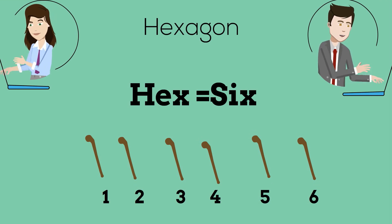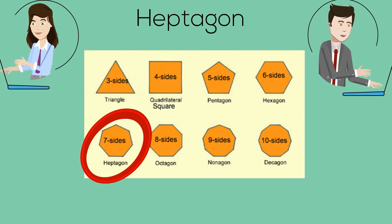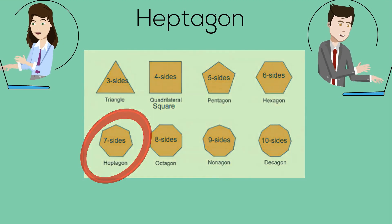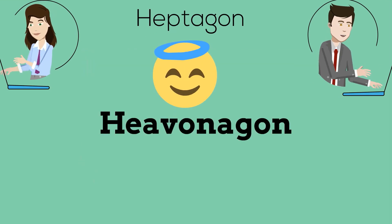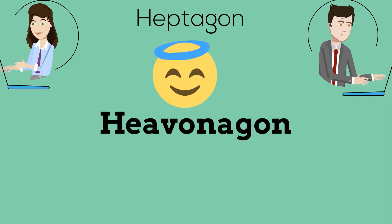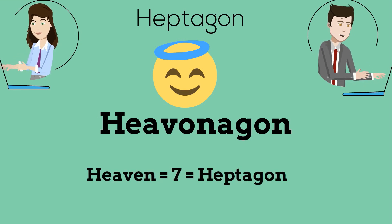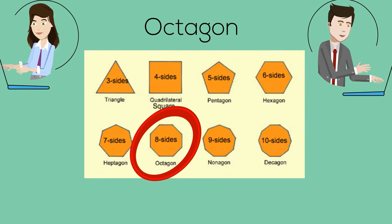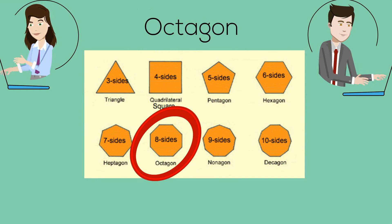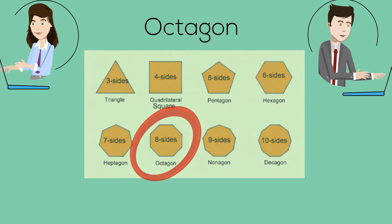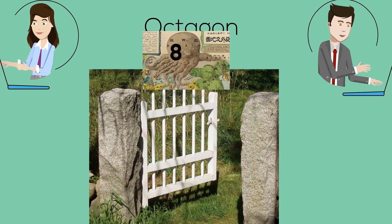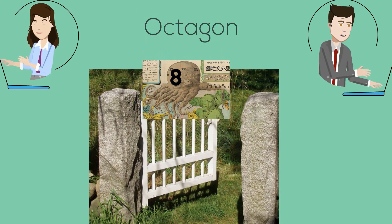A heptagon sounds a little like a heavenagon, so remember heaven is seven for heptagon. An 8-sided polygon is an octagon, so imagine an octopus with eight arms on a gate.